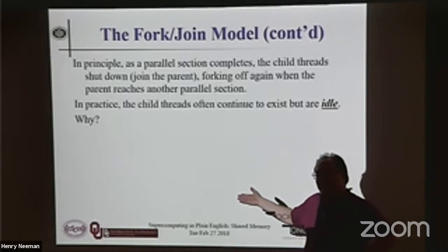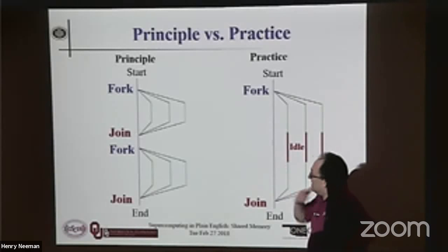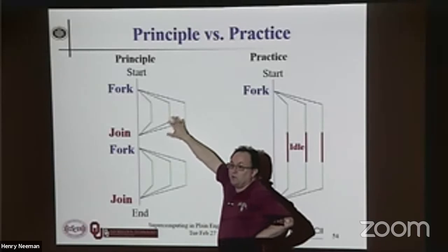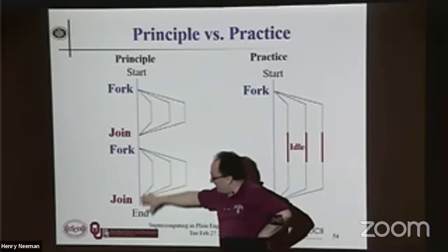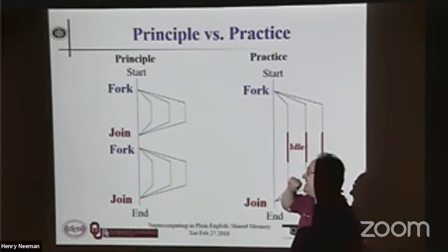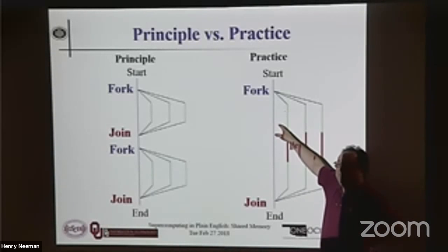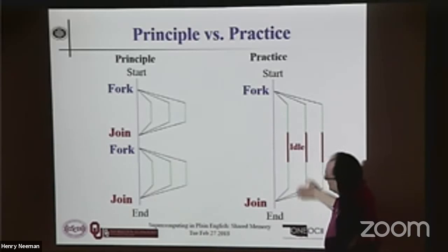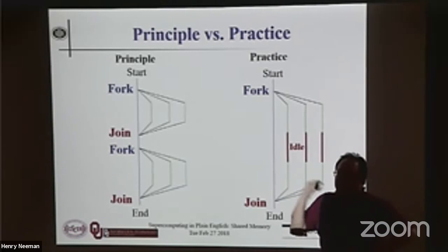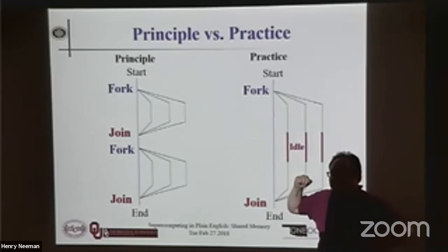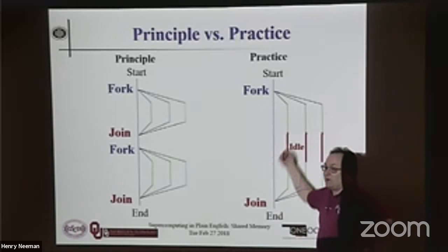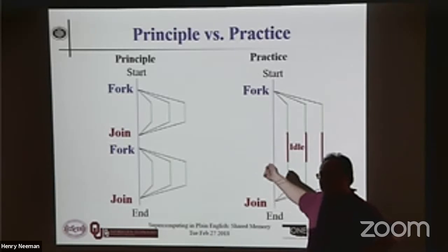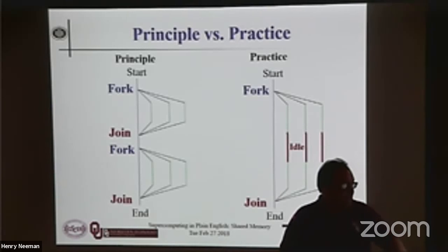What I just described is what happens in theory. In practice, often what happens is I just fork the children at the very beginning, and when I don't need them they are idle — they don't do anything. When I do need them, they do stuff. The reason is there's an overhead cost associated with forking and an overhead cost associated with joining, whereas there isn't much overhead associated with not doing anything. So I'll just leave them there, reactivate them when I need them, tell them to do something, and in the meantime continue on anyway.